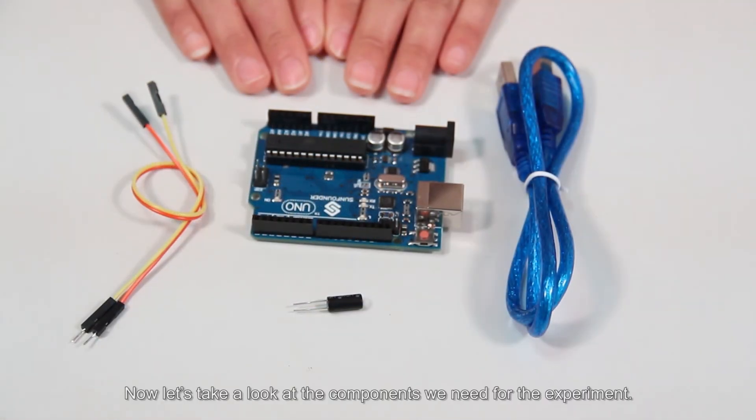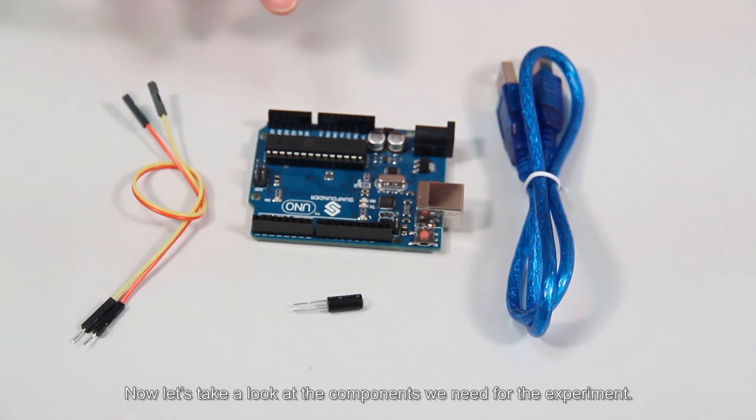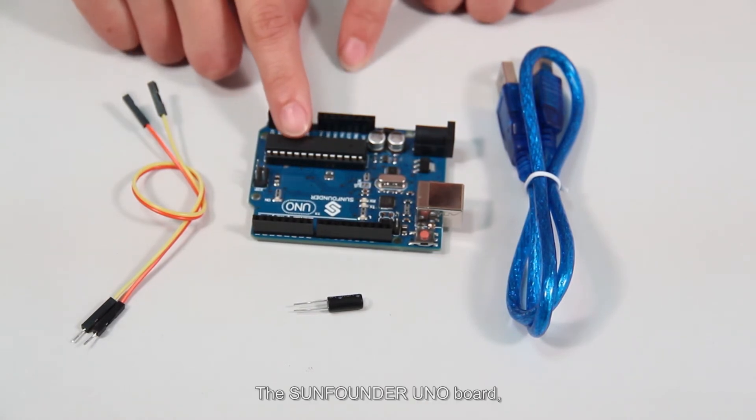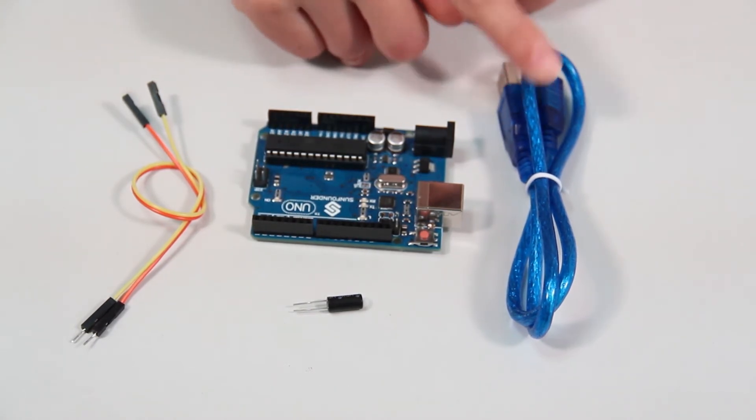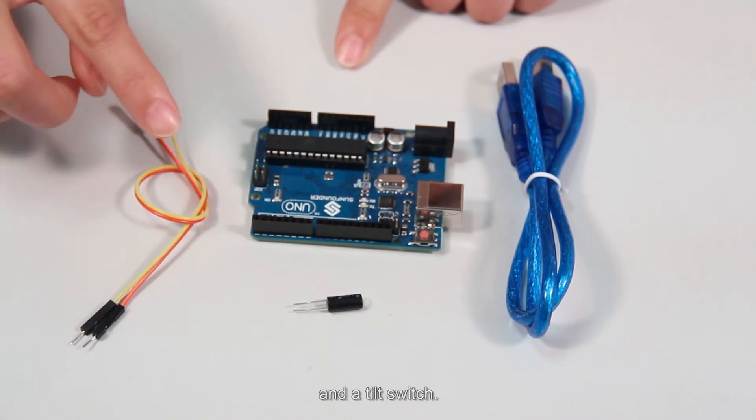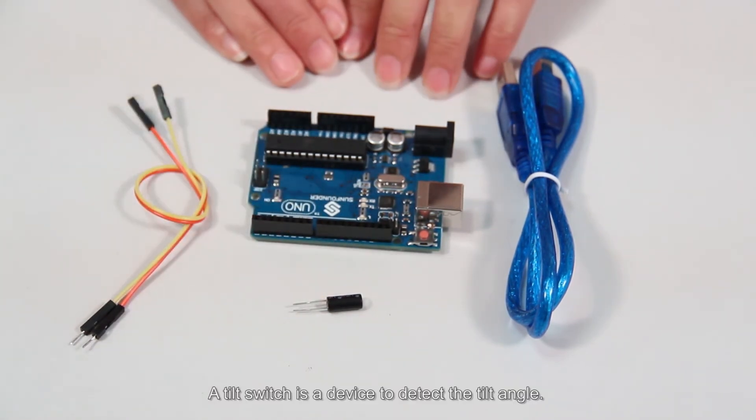Now, let's take a look at the components we need for the experiment: the SunFounder UNO board, a USB cable, some jumper wires, and a tilt switch. A tilt switch is a device to detect the tilt angle.